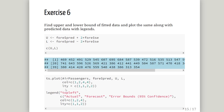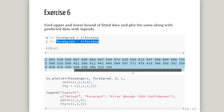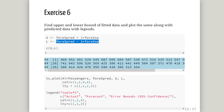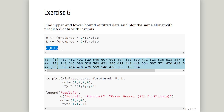Find the upper and lower bound of the fitted data and plot these along with the predicted data with legends. We create an upper bound using the forecast predicted values plus the standard error, and a lower bound using the predicted values minus the standard error — essentially the upper and lower limits of a confidence interval.